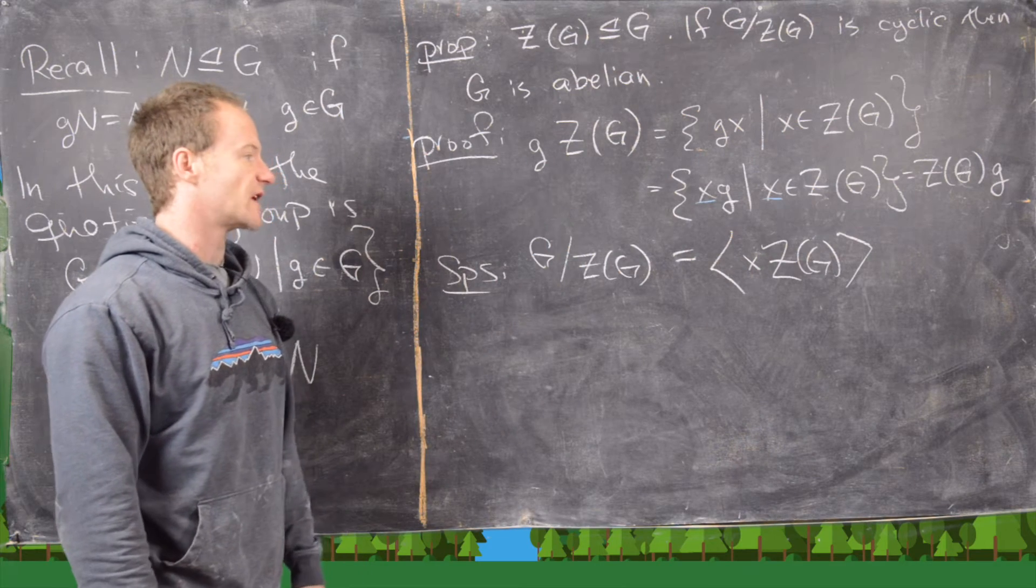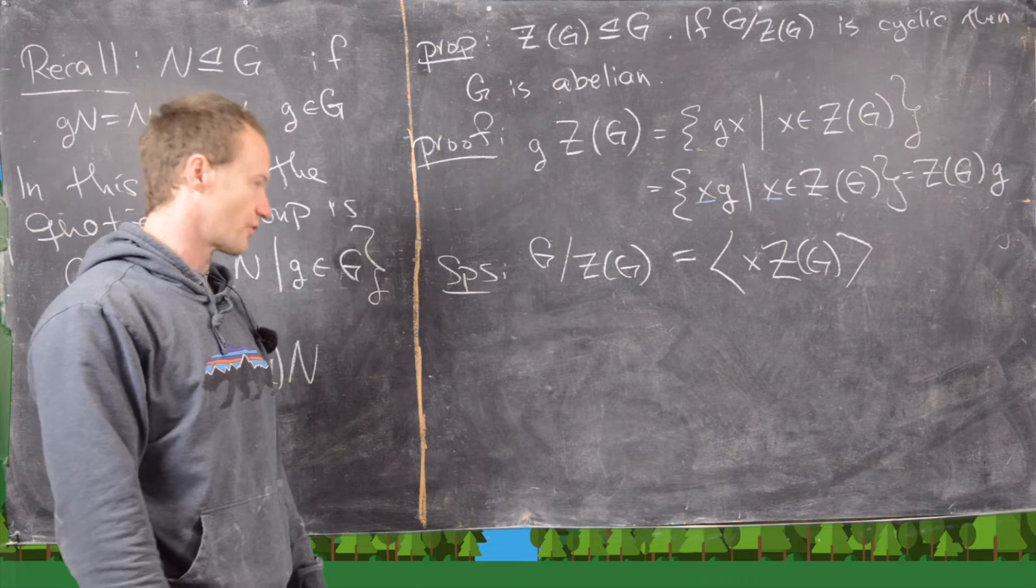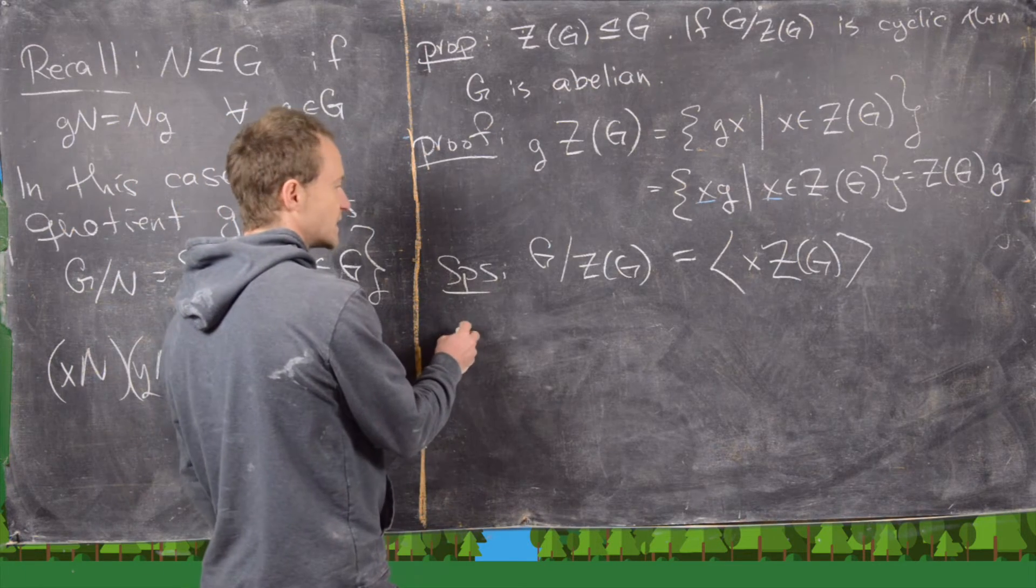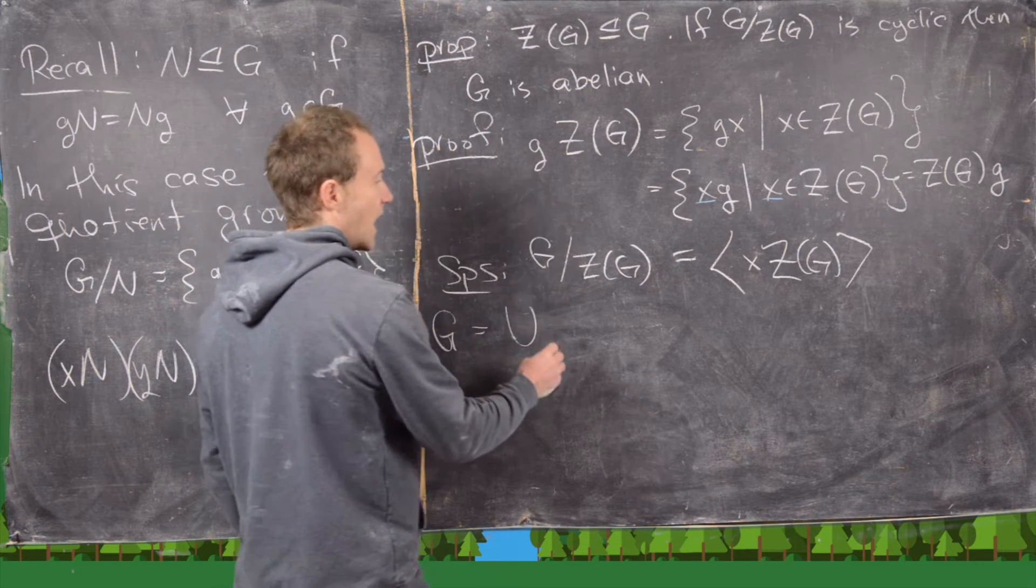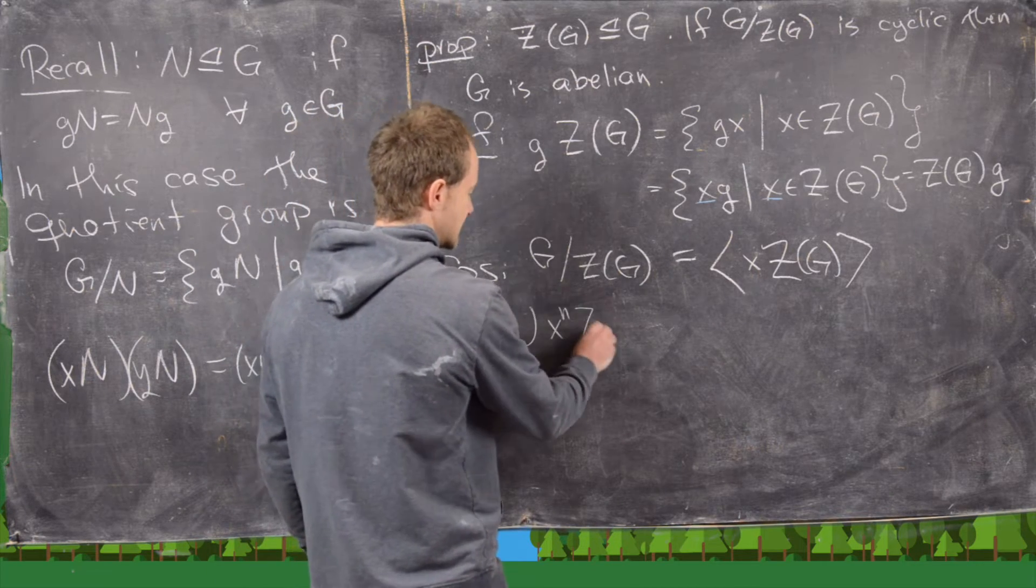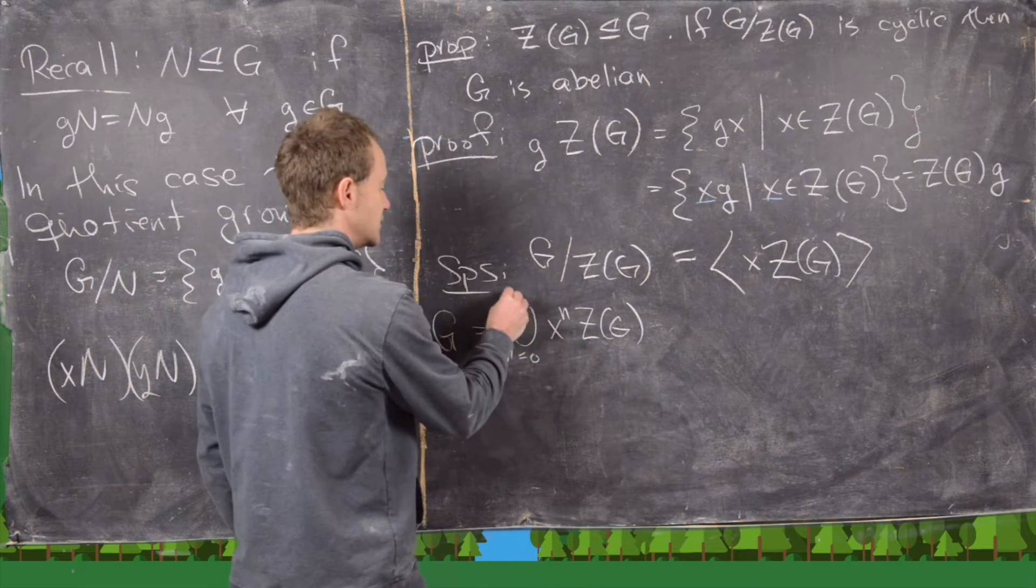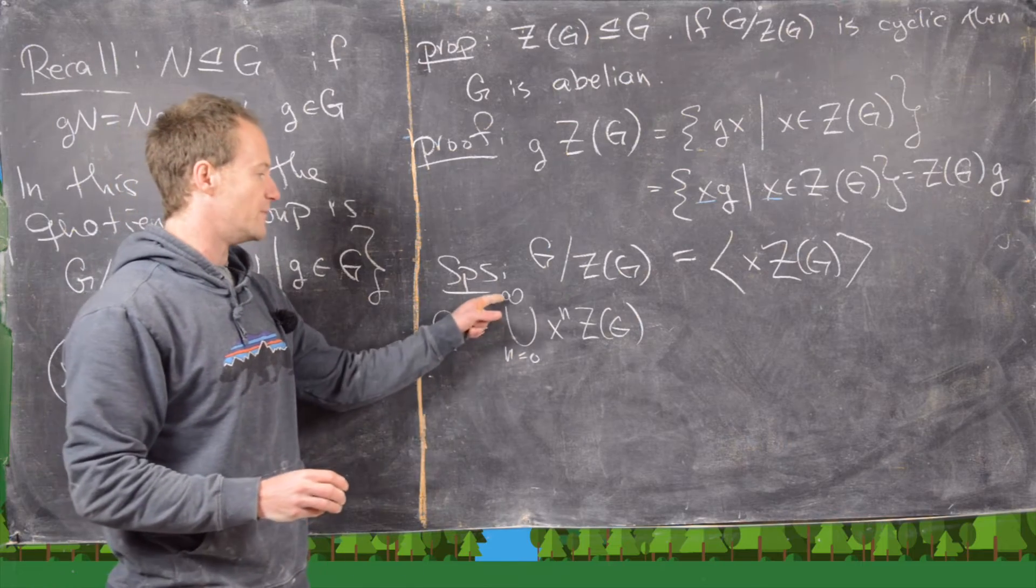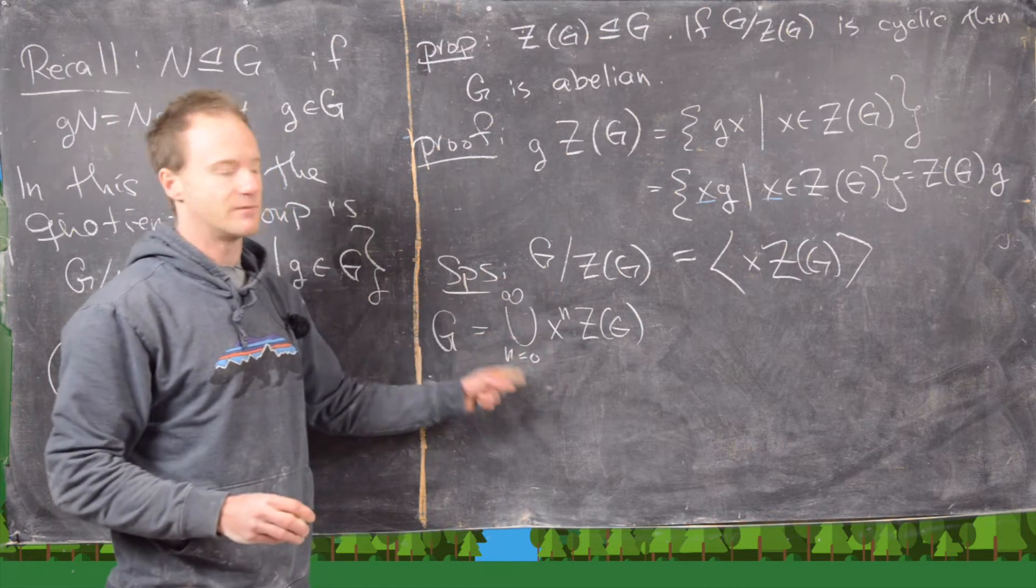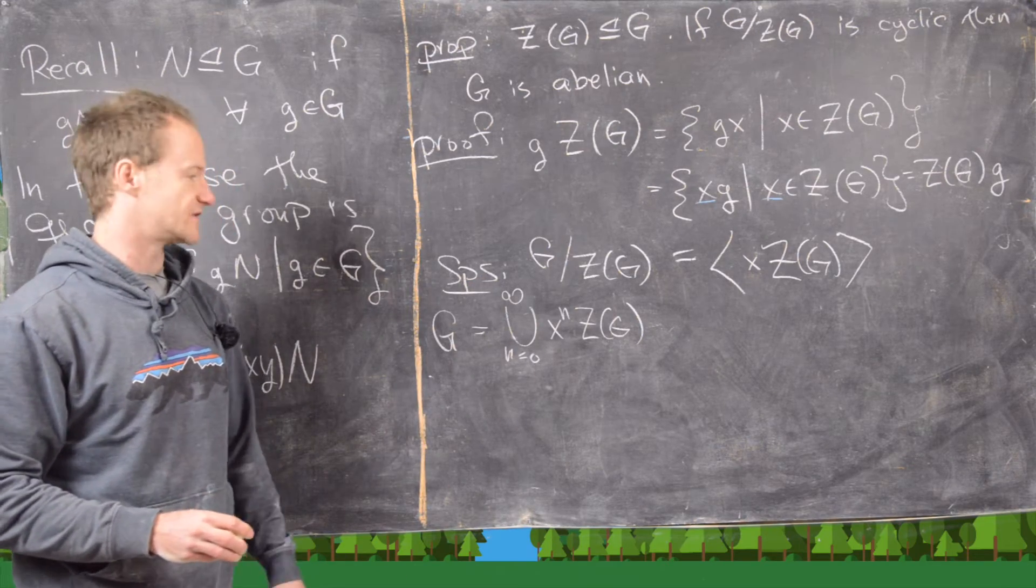So now we're going to use a fact about cosets, and that is they partition the group. So in other words, we can write G as the union of X^N Z(G) as N runs from 0 up to infinity. We may not need to go to infinity because this might be finite, but just in case we can keep doing that, and then it just won't be a disjoint union, but that's okay.